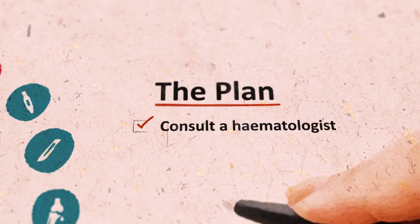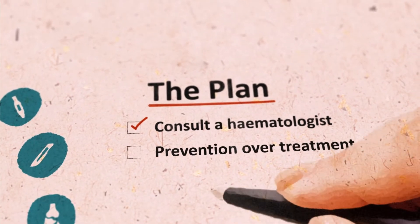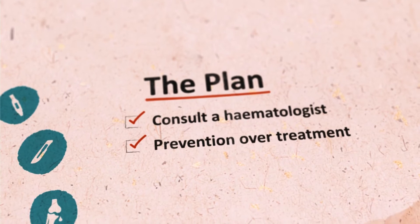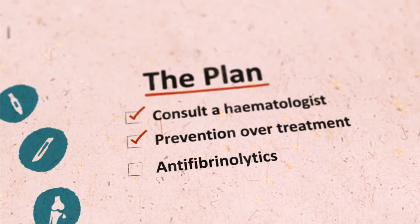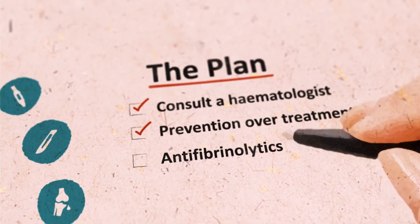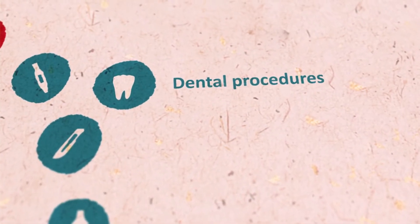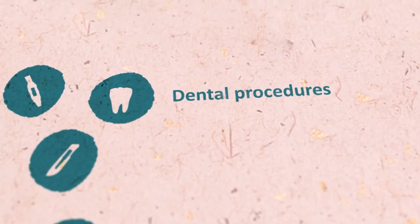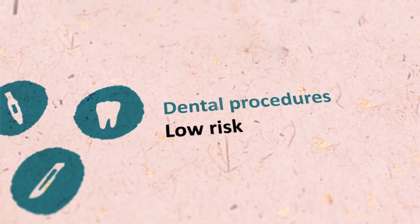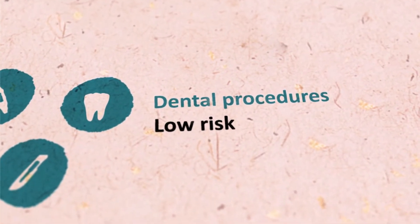Always ensure a haemostasis care plan is in place. Don't hesitate to consult the haematologist upfront to discuss the right approach, as prevention is always preferred over treatment of bleeding. For minor procedures, anti-fibrinolytics may be sufficient to manage the bleeding risk. Dental procedures also require upfront risk assessment and careful planning.